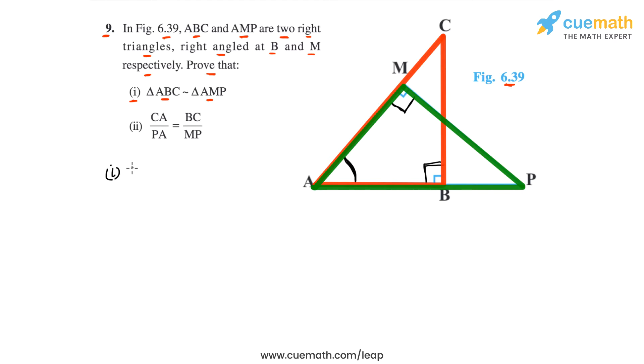Part 1: we have angle BAC equal to angle MAP in the second triangle. Why? Because this is basically the same angle, so we can write the reason as common.